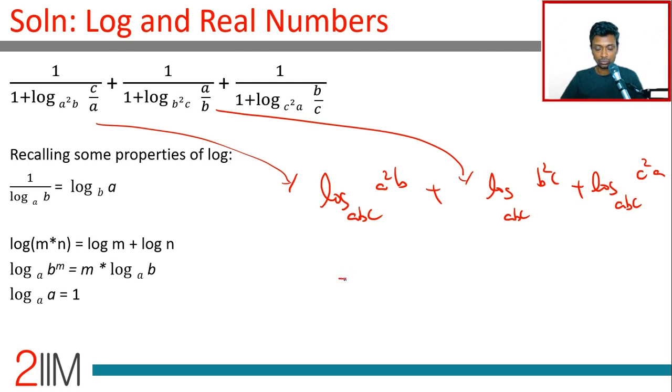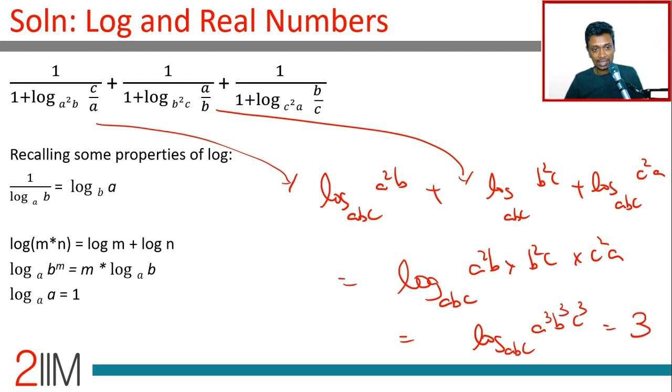Plus log c²a to the base abc, which is log of a²b times b²c times c²a to the base abc, which is log of a³b³c³ to the base abc.